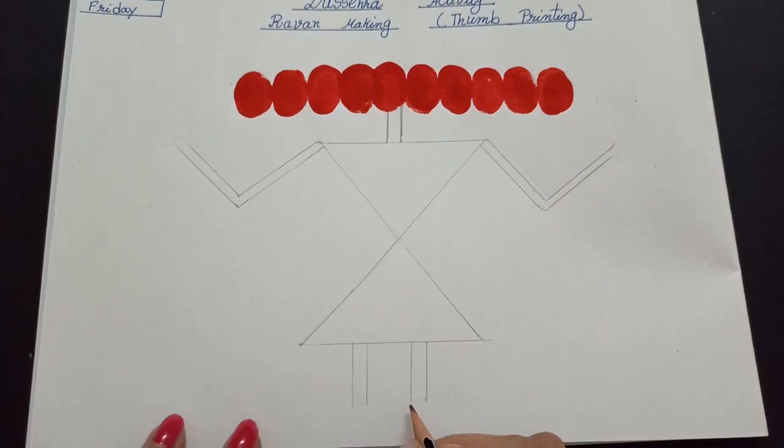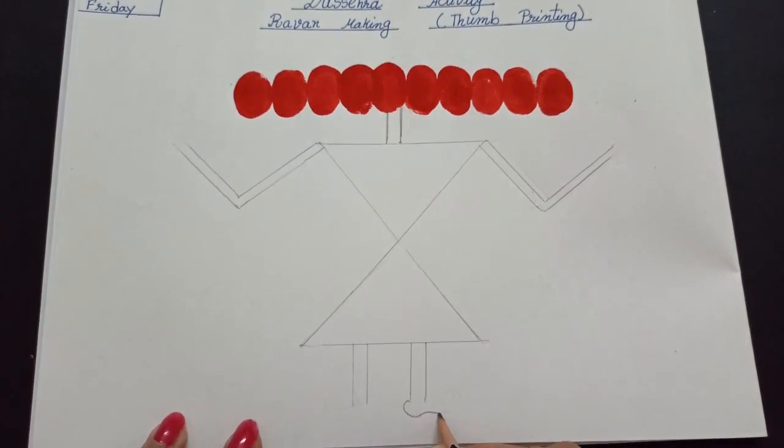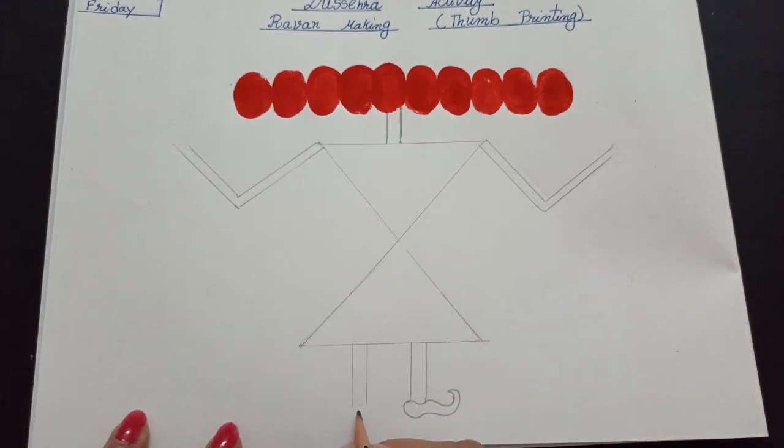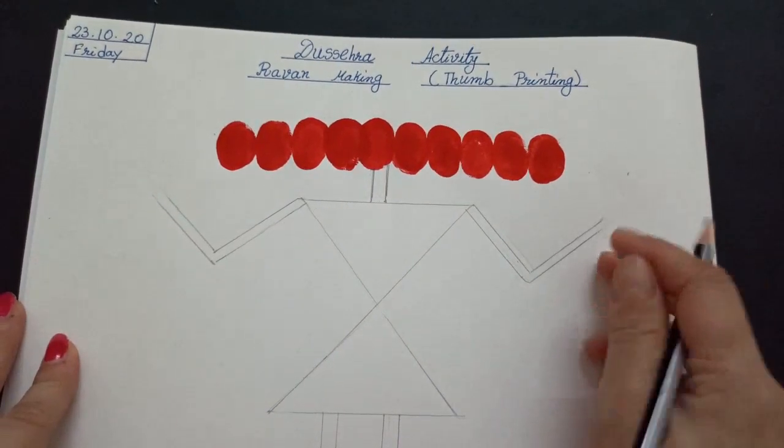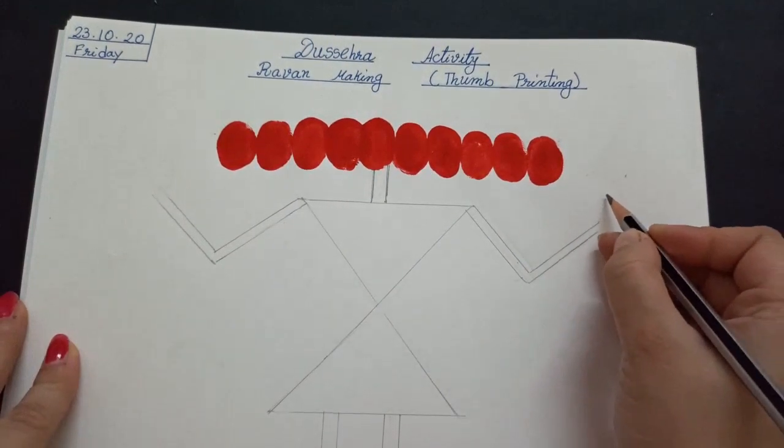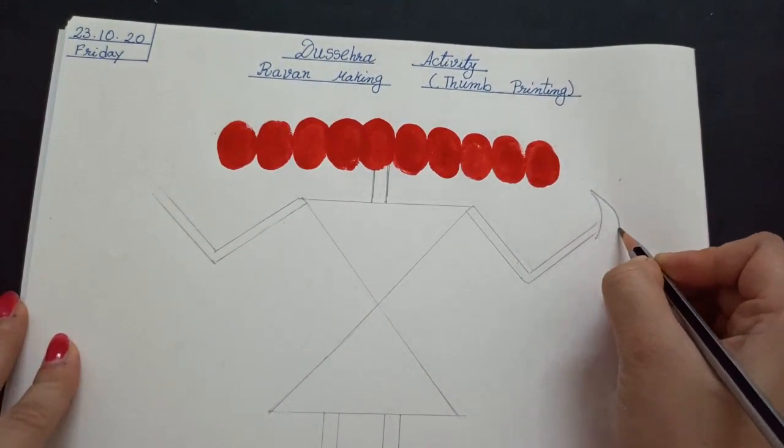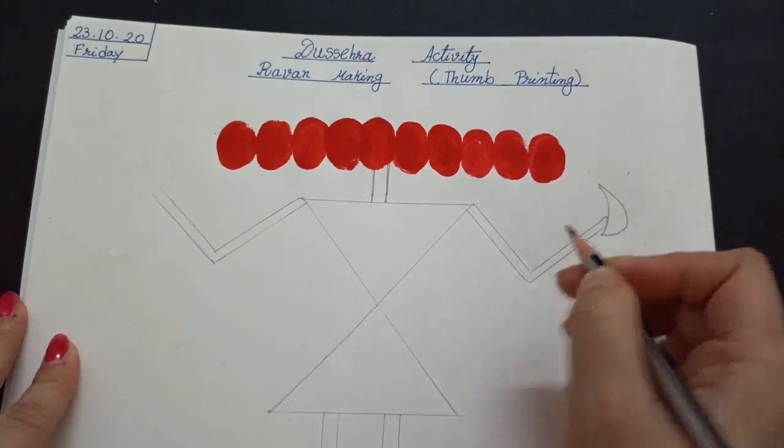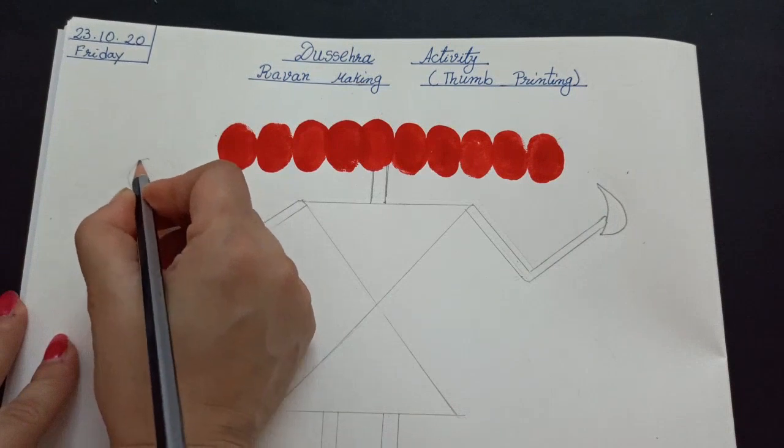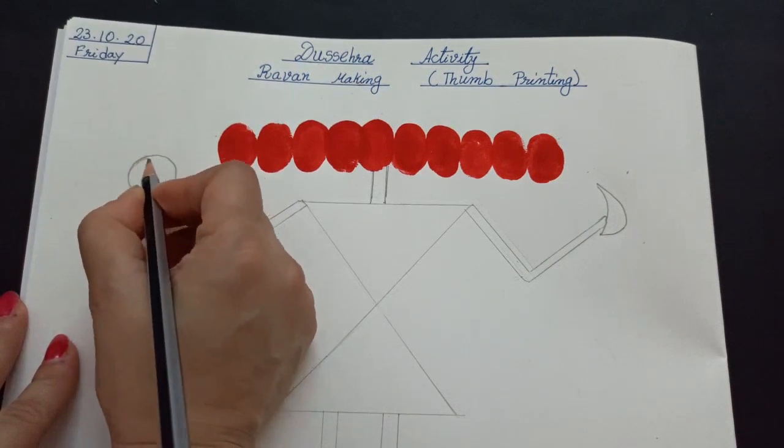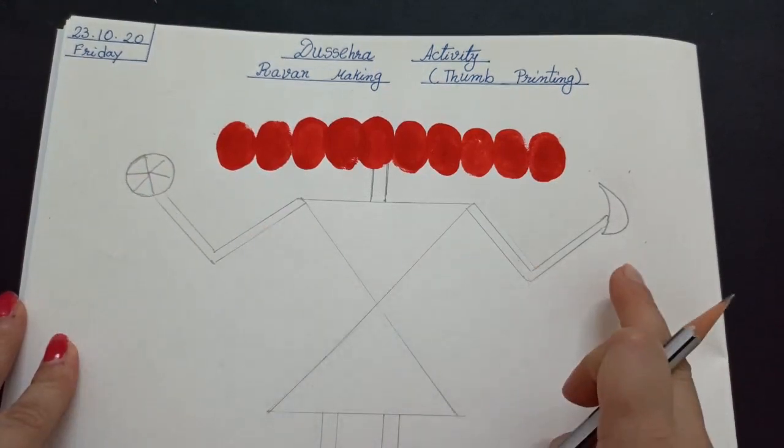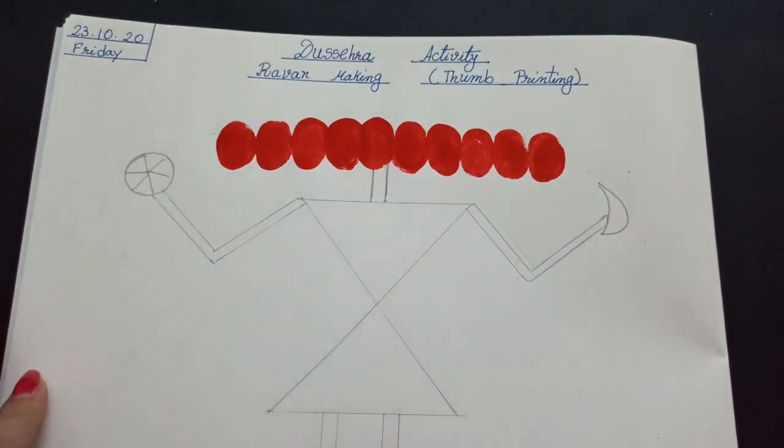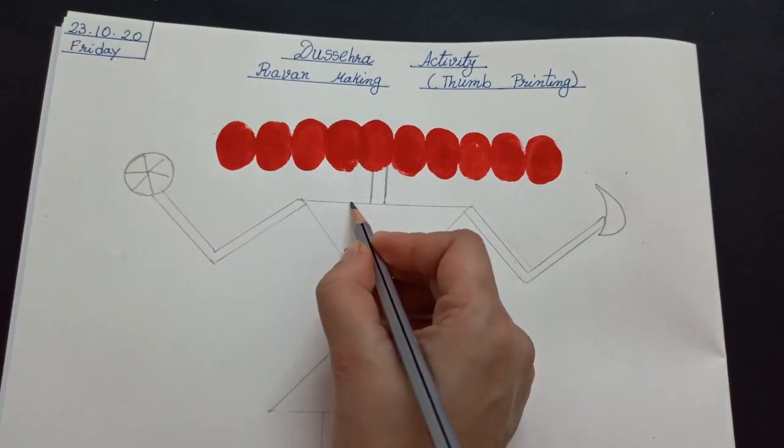Now, let's make Ravan's shoes. Like this. Now, we will make Ravan's weapons. Sword and shield. Let's make sword. And shield. Dhal or talwar. Let's make a design on Ravan's dress.